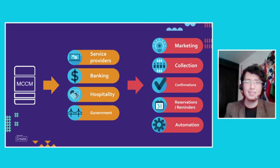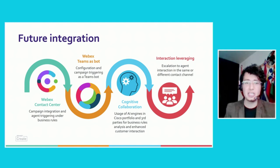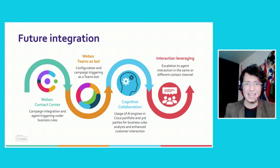Everything is controlled from within the Finesse console. In the future scope, we want seamless integration with Webex Contact Center, support for Webex Teams for automating reachability, cognitive collaboration to detect intelligence and trends from these events, and finally to enable two-way communication after a reachability process. That's all from my side — thank you and have a great time.